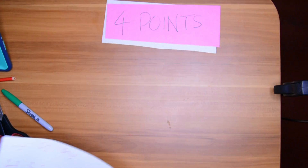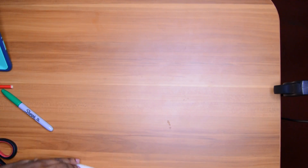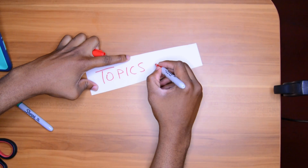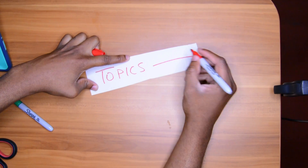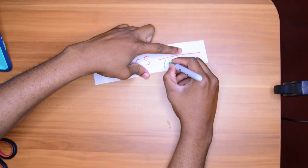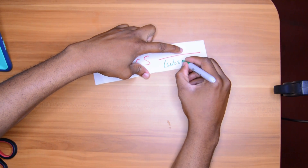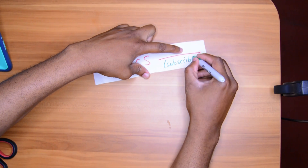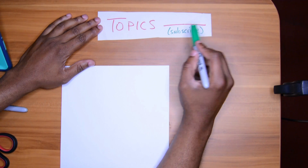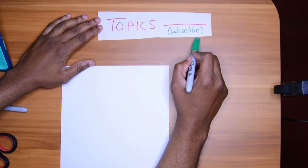Point four: there are a lot of subtopics in algebra. Let's list some of these topics — pay close attention to the green handwriting.